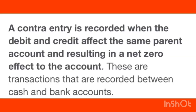A contra entry is recorded when the debit and credit affect the same parent account, resulting in a net-zero effect to the account. We have a debit side and credit side. These are transactions that are recorded between cash and bank accounts.